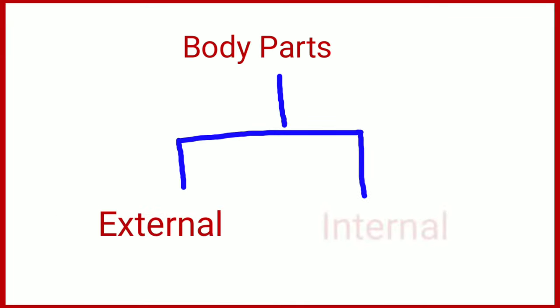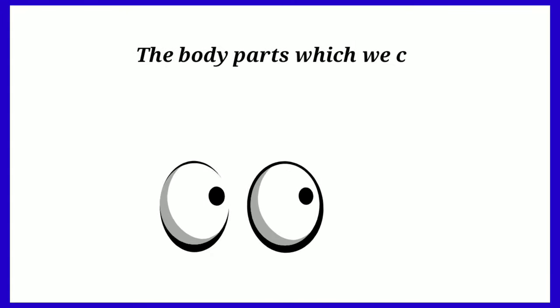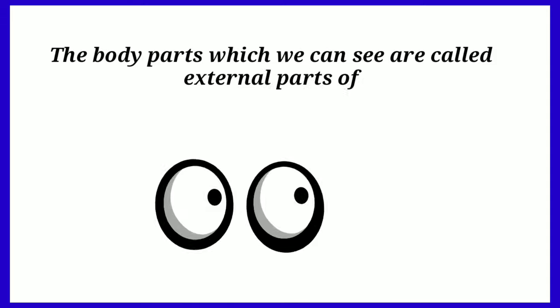These parts are divided into two types. One is external, another one is internal. The body parts which we can see are called external parts of our body.